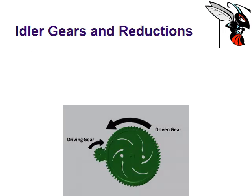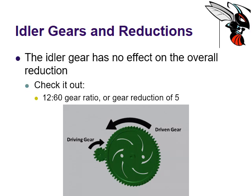Now what does that do to a reduction? The idler gear actually has nothing to do with the reduction. So here is a gear system without an idler gear at all. It's a 12 to 60 gear ratio, so that means it's a gear reduction of five. In this configuration, are we outputting five times the torque or five times the speed? Hopefully you can figure that out, but the gear reduction here is five.